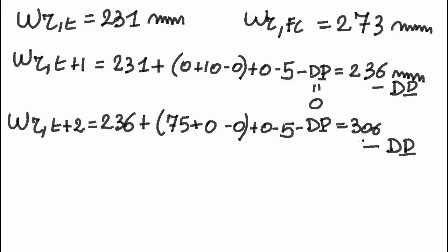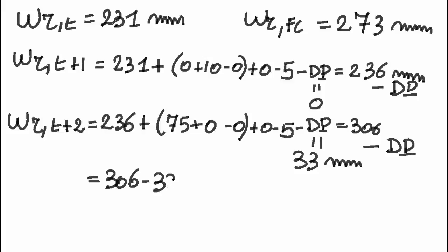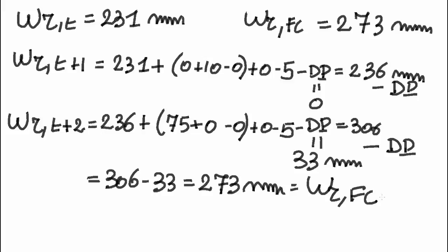This time the amount of water in the root zone is above field capacity, so we must consider deep percolation. Deep percolation is calculated as the difference between the water content at field capacity (273) and the calculated water content (306), so 33 millimeters must be lost as deep percolation. The water content at the end of the day will be 306 minus 33, giving 273 millimeters — the water content in the root zone at field capacity.